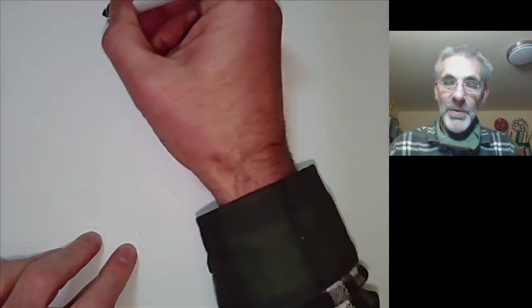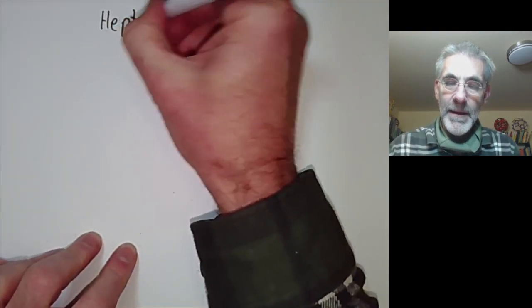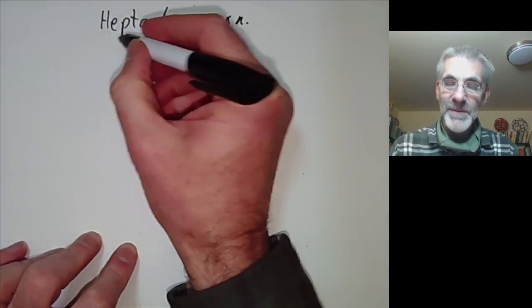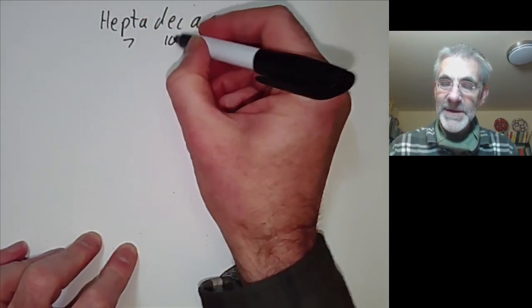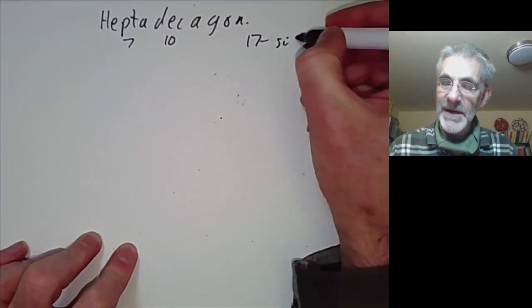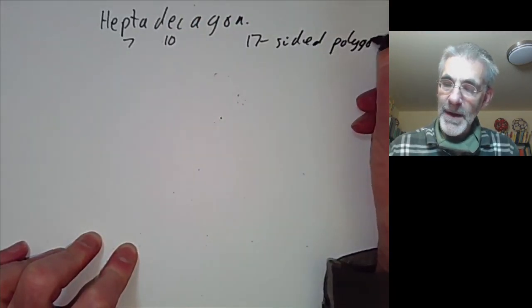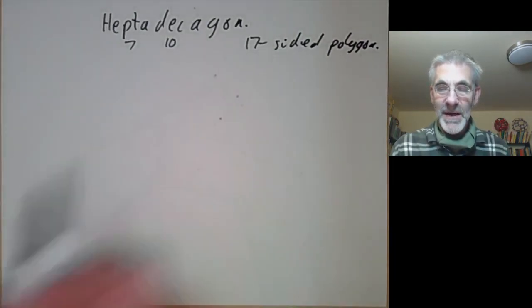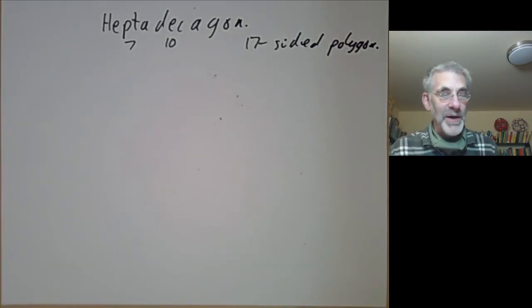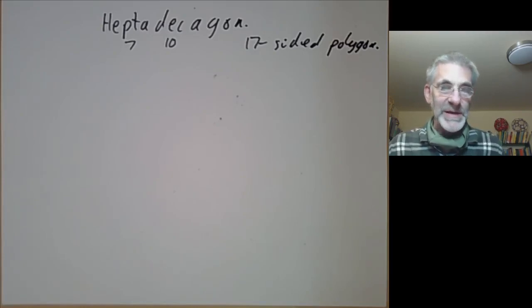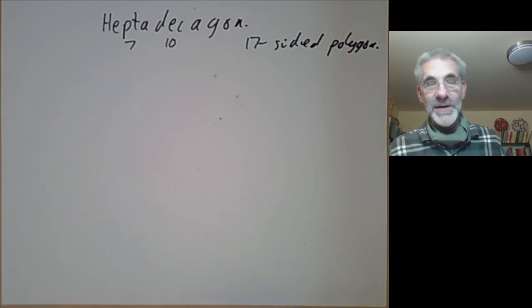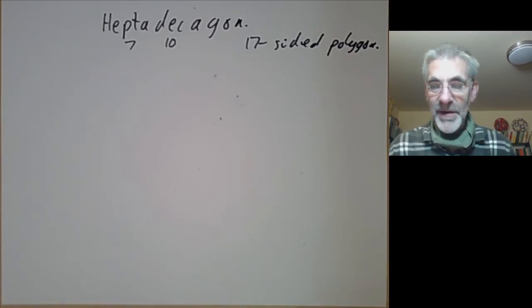This lecture is part of an online Galois theory course and will be about the heptadecagon, or the regular heptadecagon. Hepta is 7 and deca means 10, so this is a 17-sided polygon. One of Gauss's most famous early results was showing how to construct a 17-sided polygon using a ruler and compass. Constructing a 17-sided polygon using ruler and compass is completely naturally pointless, but it still gives a nice application of Galois theory.